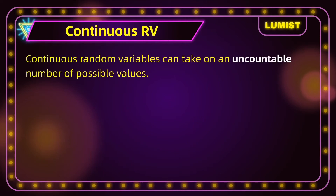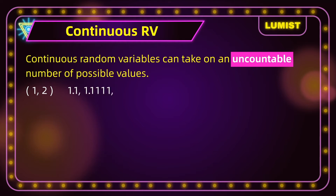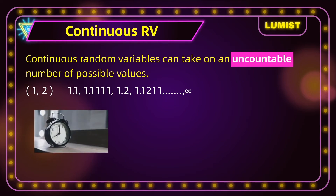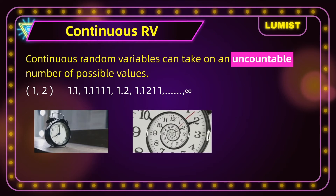Continuous random variables, on the other hand, take on an uncountable number of possible values. A continuous random variable can take on an infinite amount of values — infinitely many values. For example, consider a random variable taking on any number in the interval [1, 2]. The possibilities here are endless. It could take 1.1, or 1.1111, or 1.2, or 1.1211, and so forth. There are an infinite amount of values the random variable can take. A more real-world example would be the amount of time it may take to do something, as the possibilities of that are also endless. It is uncountable, so it is continuous.